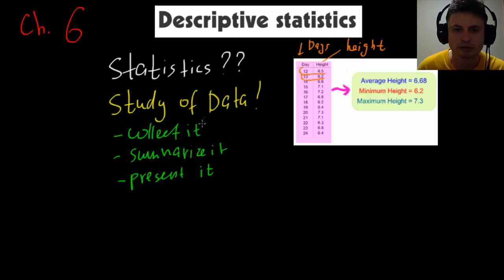And using this data, we can actually then, so this is us collecting it, so we just collect the data, and we can then summarize it. We can summarize it into three specific statistical values: average height, so this is average height of, let's just say water level, which is 6.68, and this is average height for all of these values divided by the number of values. And minimum height, this is the minimum level, this was 6.2, and the maximum height is 7.3. So this is maximum height, maximum level of water. And this is us presenting it afterwards. So basically you can present it by saying average height is 6.68, and this is also known as the mean.